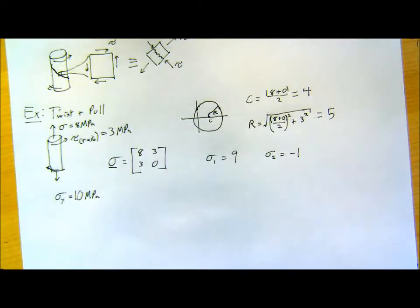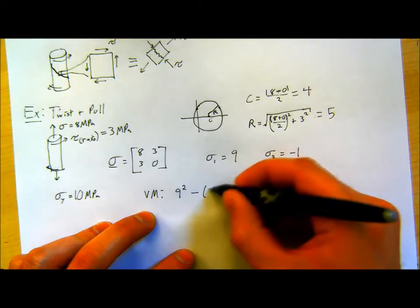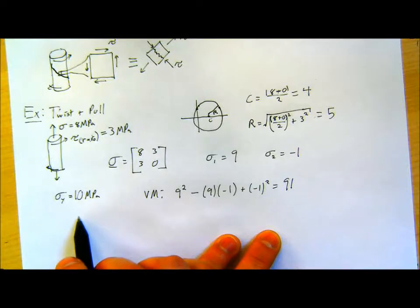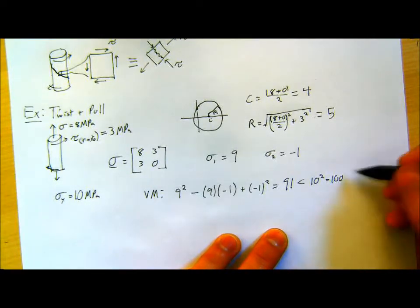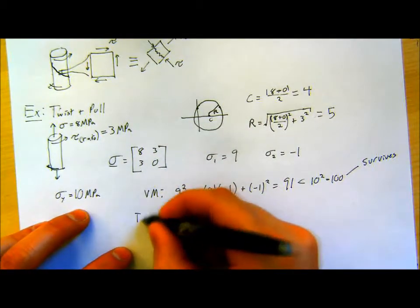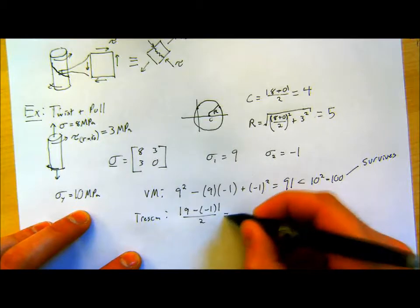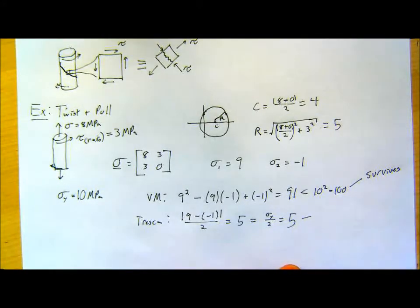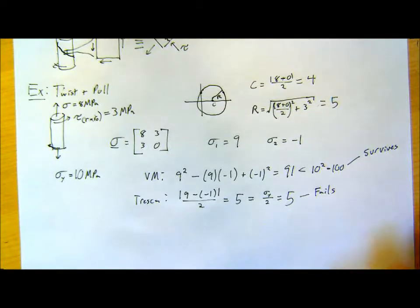Now I'm going to plug these into the Von Mises and Tresca criteria. With Von Mises: 9 squared minus 9 times minus 1 plus minus 1 squared equals 91. With our yield strength of 10 MPa, 91 is less than 10 squared = 100 MPa squared. So with the Von Mises criterion, this material survives — there is no failure yet. With our Tresca criterion: absolute value of 9 minus (−1) over 2 equals 5, which is also equal to our yield strength over 2 = 5. So based on the Tresca criterion, we're just starting to fail our material — this thing fails.